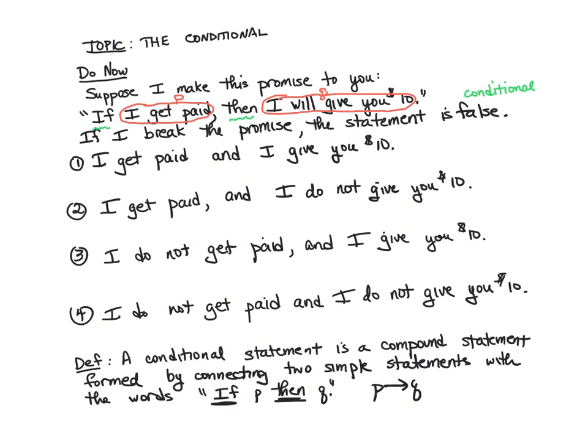So these two are the same — what we have in quotes and what we have symbolically. Now the simple statement that comes after 'if,' meaning the P, is called the antecedent.